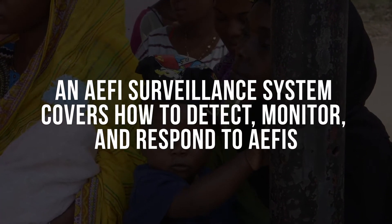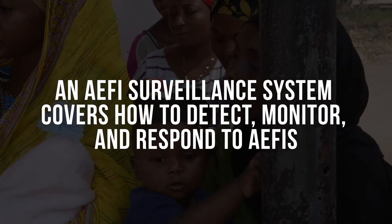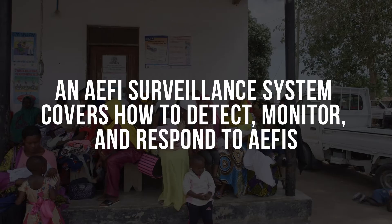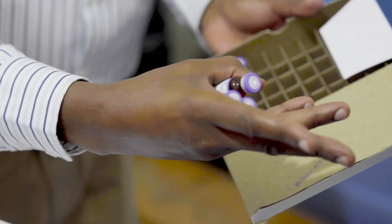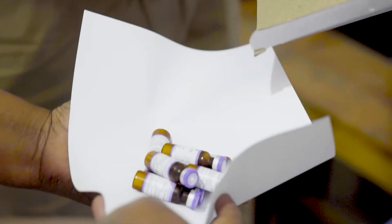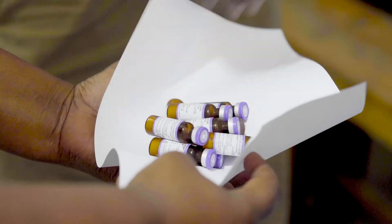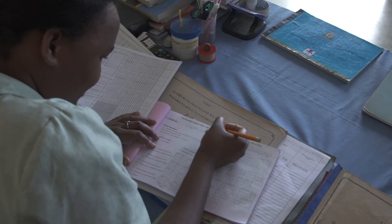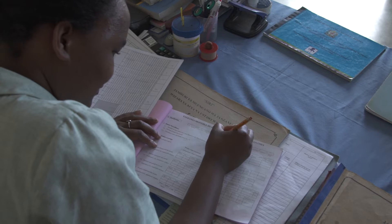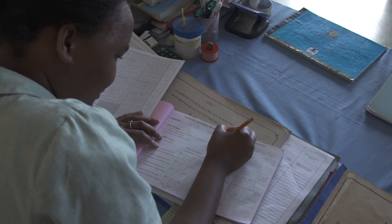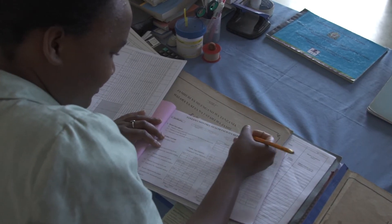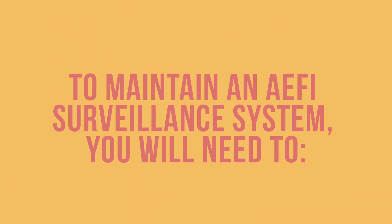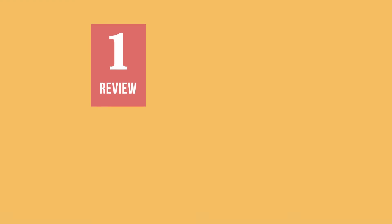AEFI surveillance is an essential part of the EPI program. An AEFI surveillance system covers how to detect, monitor, and respond to AEFIs. This includes immediate actions to be taken whether the AEFI is due to an immunization error, vaccine anxiety, or is coincidental. AEFI surveillance should be a part of any existing system of reporting information, such as monthly immunization reports.